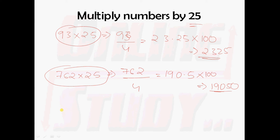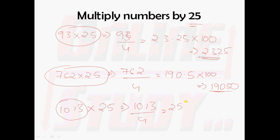We shall take one more example: 1013 into 25. First we have to divide it by 4. 1013 divided by 4 gives you 253.25. Multiply 253.25 by 100 and you get 25325. So 1013 into 25 is 25325.